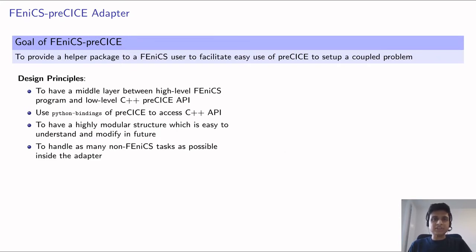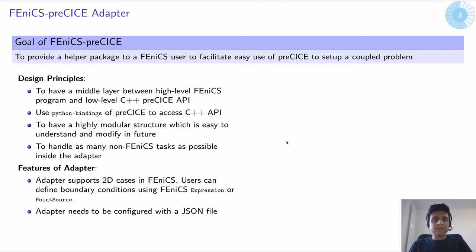The main task of the adapter is to handle as many non-FEniCS tasks as possible within itself. For example, conversion of data structures from a FEniCS format to a preCICE format and vice versa is handled inside the adapter. These non-FEniCS tasks are explicit tasks which come in especially when setting up a coupling problem with FEniCS.